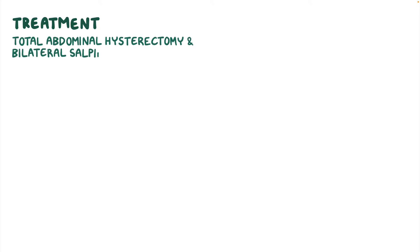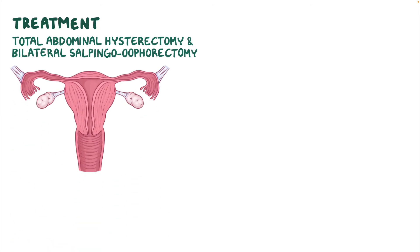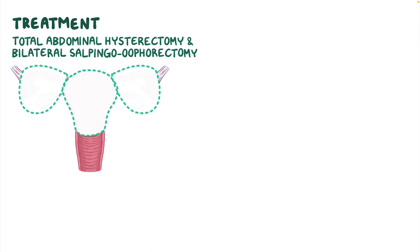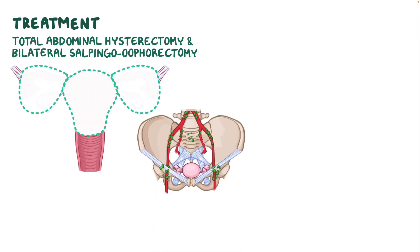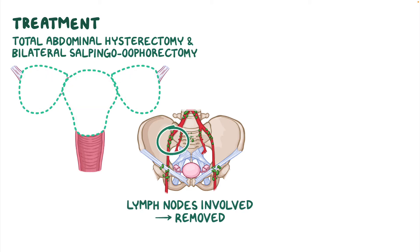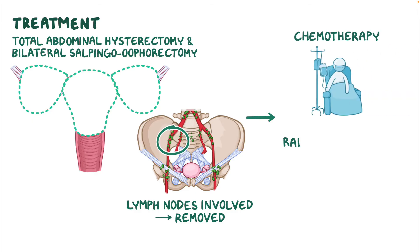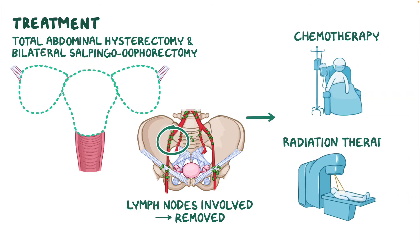The treatment of ovarian cancer includes a total abdominal hysterectomy with bilateral salpingo-oophorectomy, a surgical procedure that involves the complete removal of the uterus in addition to both fallopian tubes and ovaries. Lymph nodes may also be involved and may need to be removed.